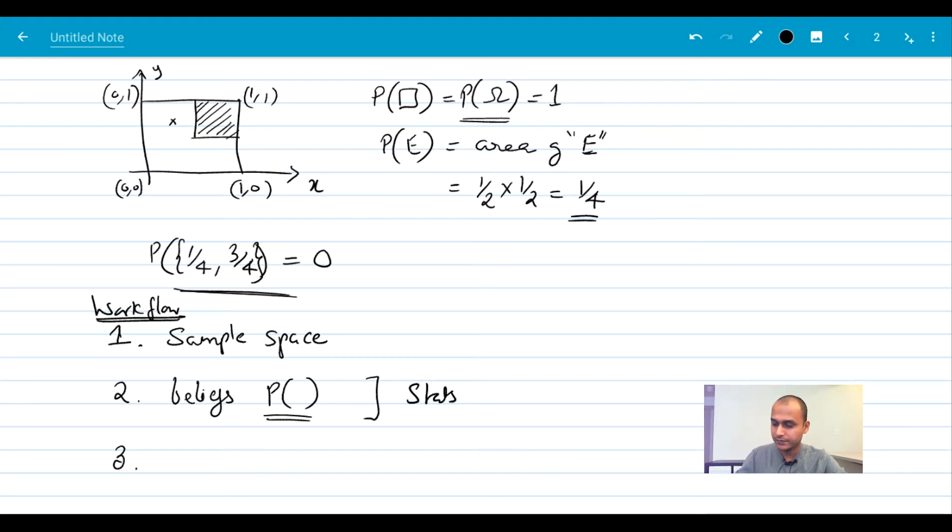This is where most of the machine learning technique comes in. For example, if you build a linear regression model, it attaches a belief to a sample space, appropriate sample space. But let's not worry about what that sample space is right here. So once we do this, this is stats or ML models. Once we attach this beliefs or the probability function, then we can identify an event of interest. Let's say E. And then we can now compute the probability of E. And this is a computation. And this computation may itself involve summations or things of that nature.